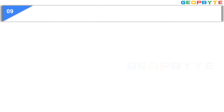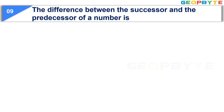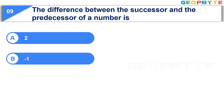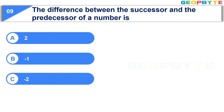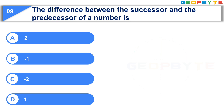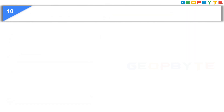The 9th question is: The difference between the successor and the predecessor of a number is. Option A: 2. Option B: -1. Option C: -2. Option D: 1. Your time starts now. Your time is up and the correct answer is Option A: 2.